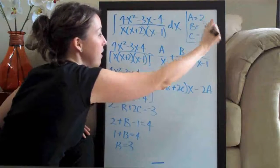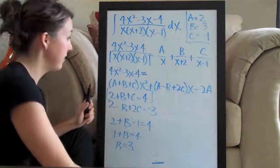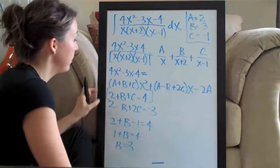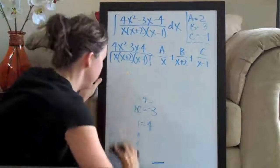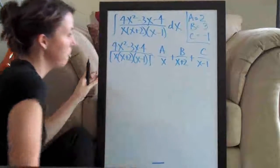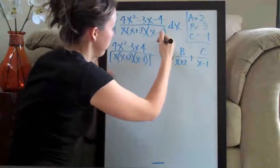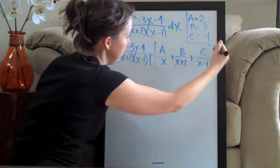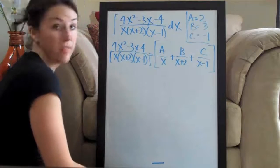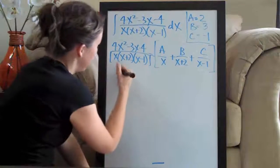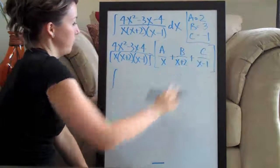Finally, so b is 3. So, we have now solved for a, b and c and we can go ahead and erase all of this because what we're going to do is plug those three numbers back into this side of the original equation that we wrote and put that back into the integral.